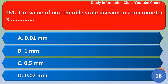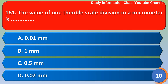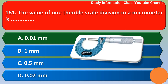The value of one single scale division in a micrometer is: option A 0.01 mm, option B 1 millimeter, option C 0.5 millimeter, option D 0.02 millimeter. The correct answer is option A: 0.01 millimeter.